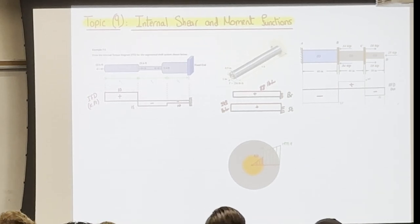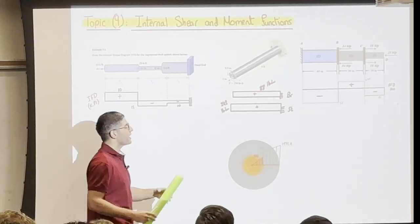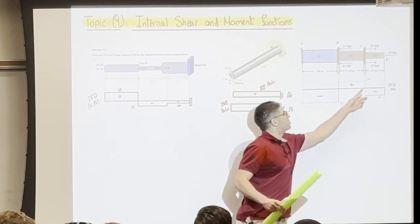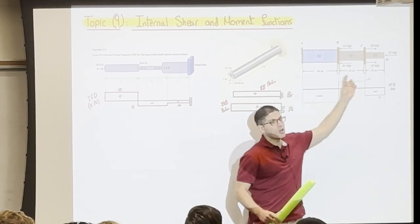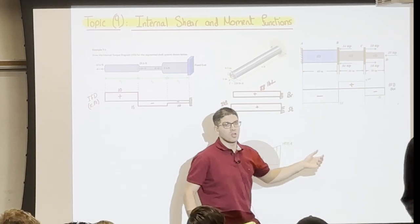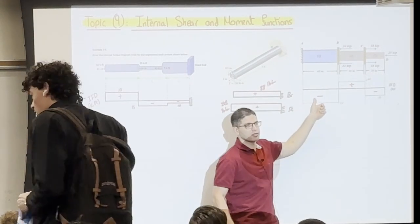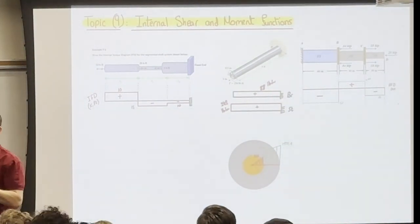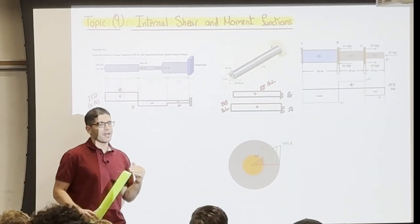The first step in designing any cross section, or checking the safety of any cross section, is to draw the AFD to tell you what each portion means — what the force at each point in this member is. After that, if we have a constant cross section, we take the maximum load and design on it. If we have different cross sections, we calculate the stresses for all of them.